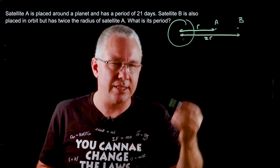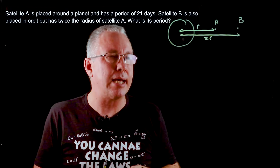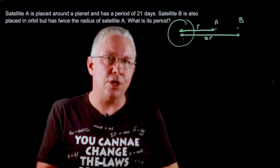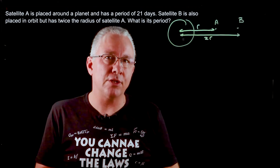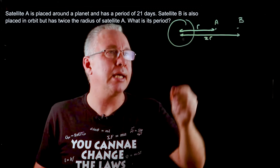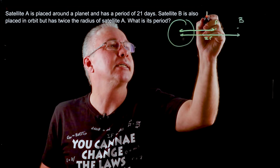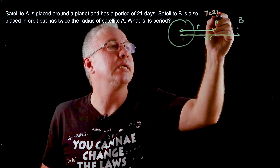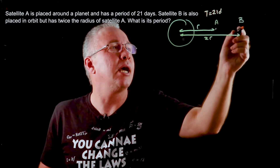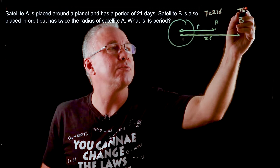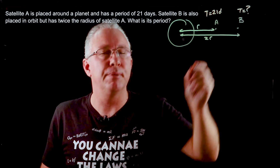Not drawn exactly to scale, but that doesn't matter. We're also told the actual period for satellite A, which is equal to 21 days, and we need to find what the period is for satellite B.